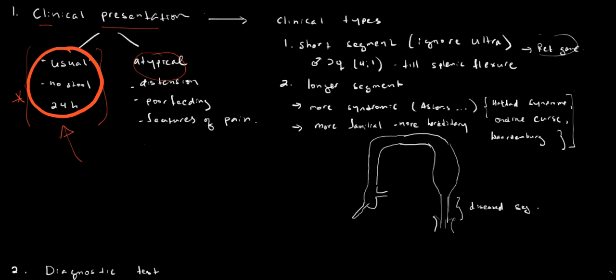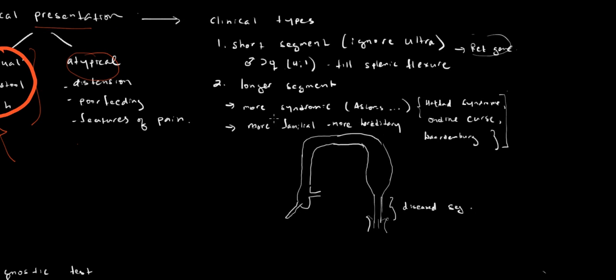Now, there are several clinical types of Hirschsprung's disease. The most common type is short-segment disease. For the purposes of this discussion, we'll ignore the ultra-short-segment disease because that really isn't part of the major Hirschsprung's disease. It's sort of a special topic. So we'll talk short-segment disease, which is the most common type.